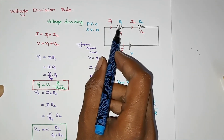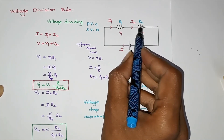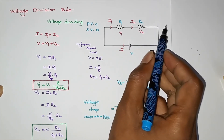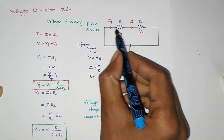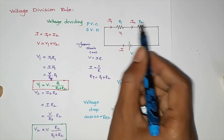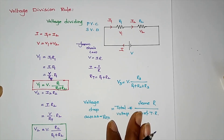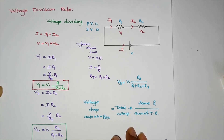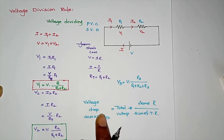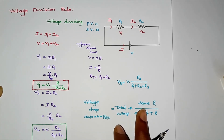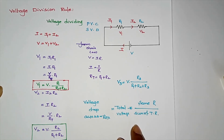In this case, we have resistances R1, R2, R3, and R4 with their respective currents. V1 equals I1 times R1, and V2 equals I2 times R2. This generalizes the voltage division rule across multiple resistors in a series circuit.